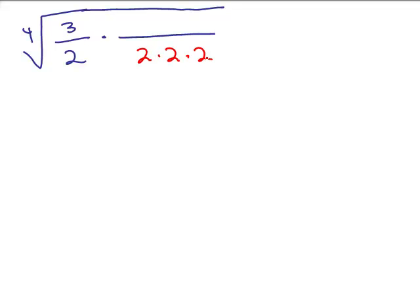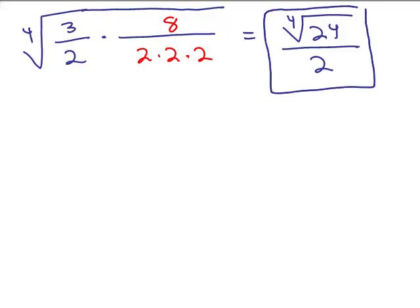I'm just going to write 8 in the numerator. It's easier. What does that give me in the numerator? I've got the 4th root of 3 times 8, which is 24. And in the denominator, I've got the 4th root of 2 to the 4th, which will be 2. Hopefully, you're kind of getting the hang of it.